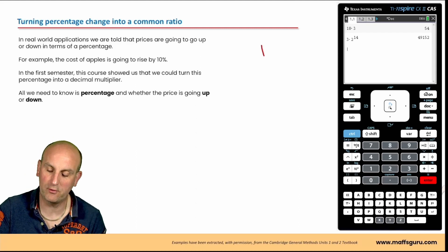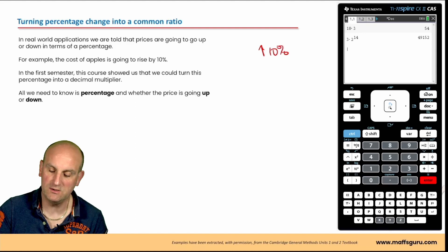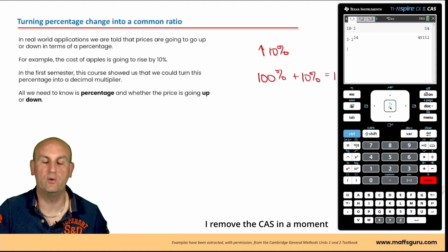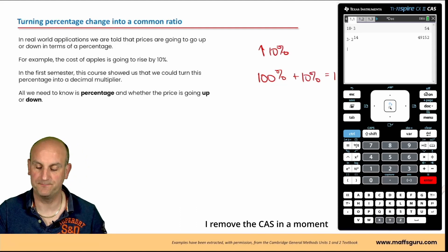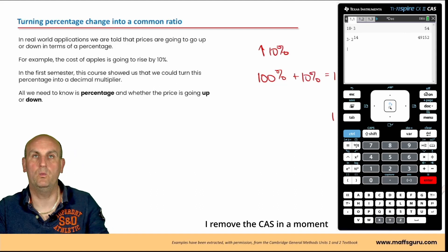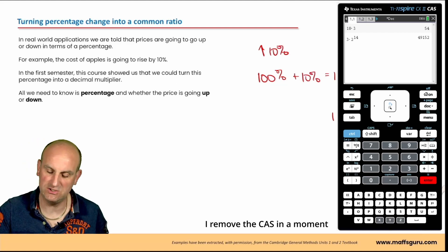So, for example, if you remember when a cost was going to rise by 10%, I used to teach it that we started with 100%, we've added on 10%, which gives me 110% of what we started with. Now, to go from a percentage to a decimal, we divide by 100. That gives me a multiplier of 1.1. So we now know a 10% increase actually is a multiplier of 1.1. Let's just check.